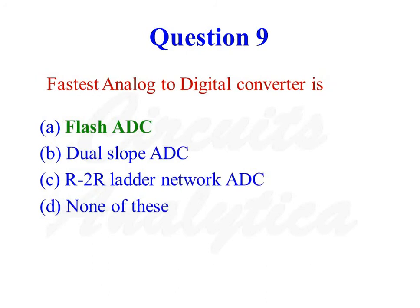Fastest analog to digital converter is flash ADC. So the correct answer is option number 1, flash ADC. Conversion time of flash ADC is the least compared to other ADCs like dual-slope ADC, counter-ramp ADC, successive approximation ADC, etc. So fastest analog to digital converter is flash ADC. The correct answer is option number 1.